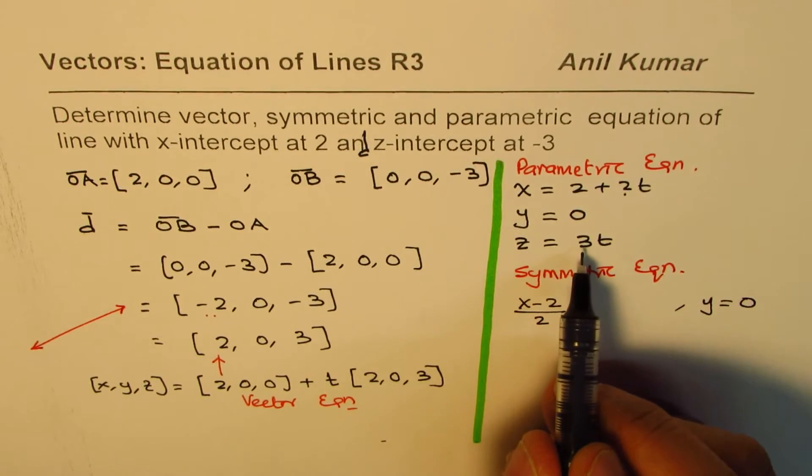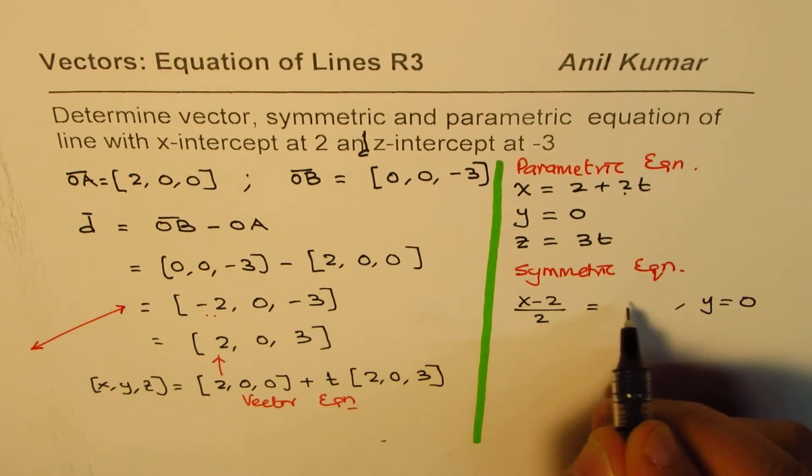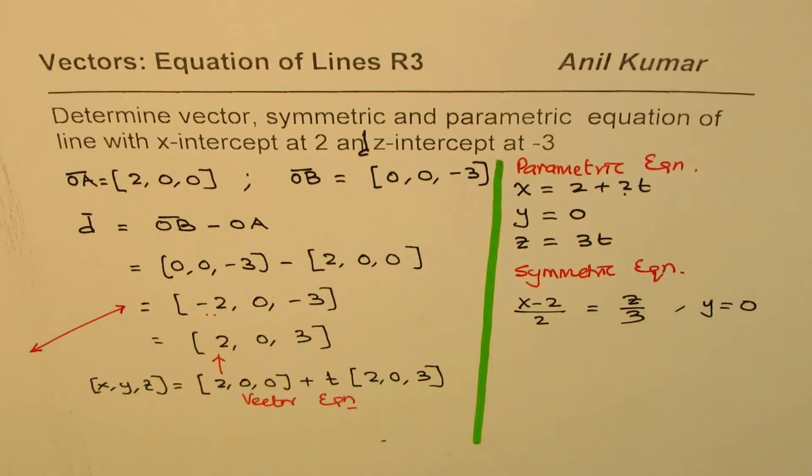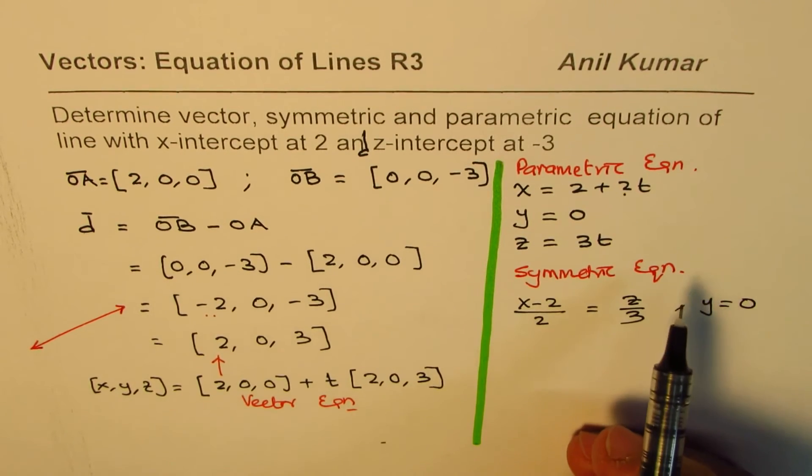And z is equal to 3t, or t is z divided by 3. So, we could write this as z divided by 3. So, that becomes the symmetric equation in the given case, right? Now, remember one thing,